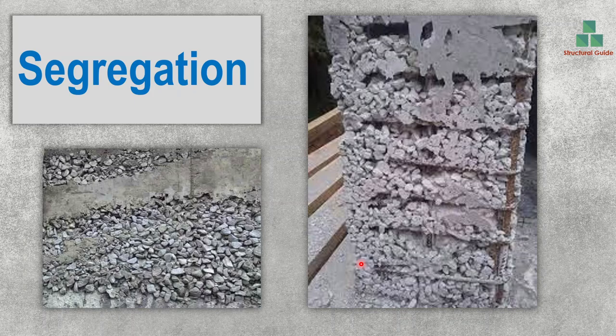Segregation is the most commonly recognized issue in the formation of honeycombs. If the free-fall height is very high, or if there is improperly mixed concrete, or if there is an issue in the mix design, there could be segregation in the concrete. Segregation means the separation of the cement mortar mix from the aggregate. As you can see in these figures, there is clear evidence of separation of the mortar mix from the coarse aggregate. In such cases, honeycombs can definitely form.